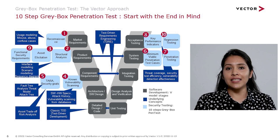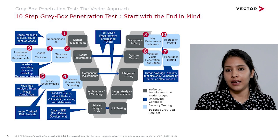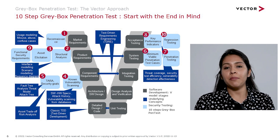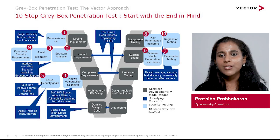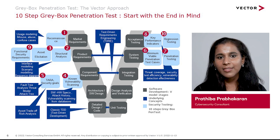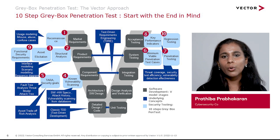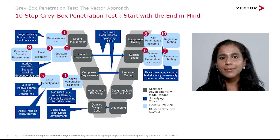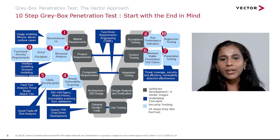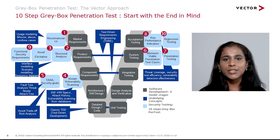Here is our 10 steps of a gray box pen test — let's look at it step by step. So how do you really start the pen test? We must always start with the end in mind, meaning to understand what the goal of a hacker is. To know what can go wrong, we must first gather all possible information about the subject under test. So initially we need reconnaissance — in other words, information gathering to collect device-specific information.